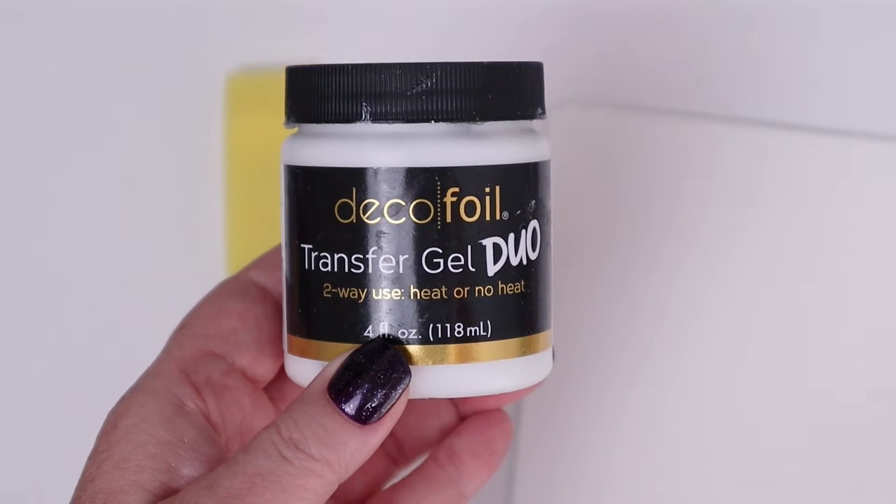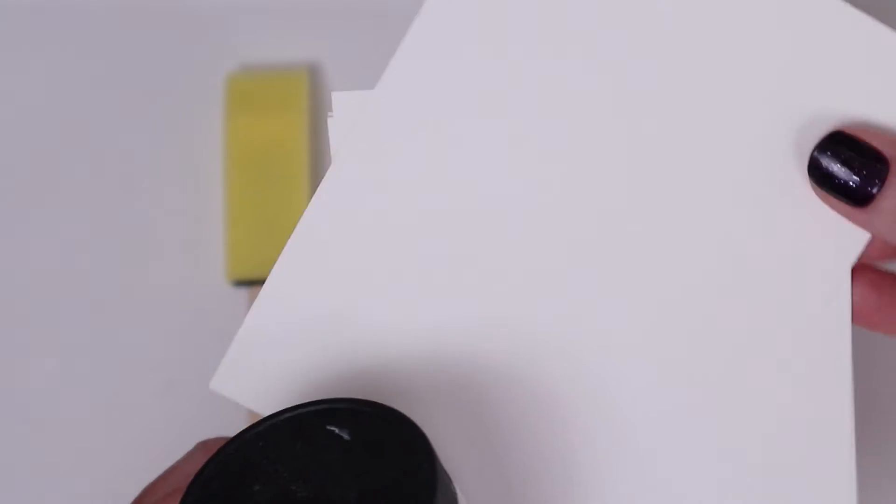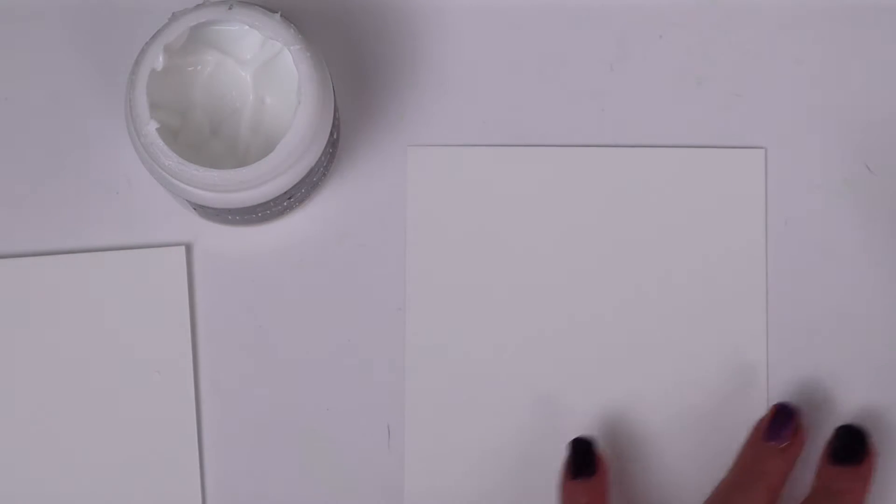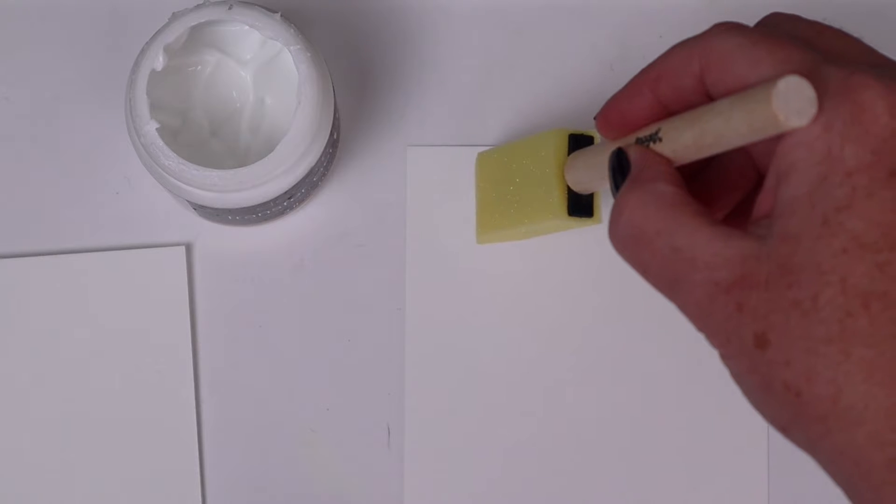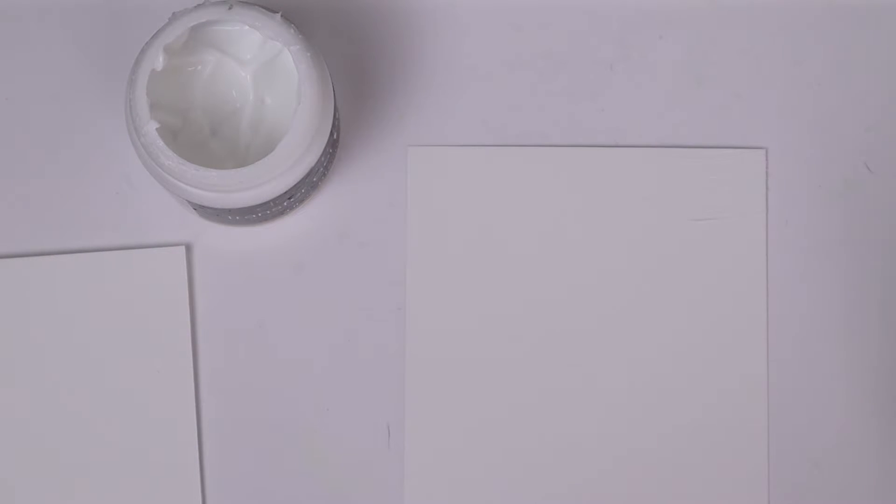For today's technique, I'm using the Deco Foil Transfer Gel Duo. The great thing about this medium is that you can either foil it by putting it through a laminator, or if you don't have a laminator and heat, you can use a die cut machine and the pressure will also transfer it.